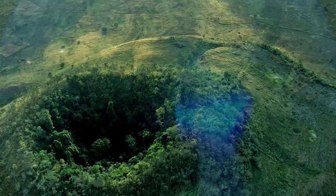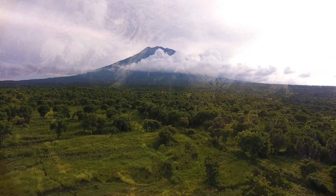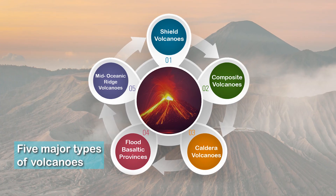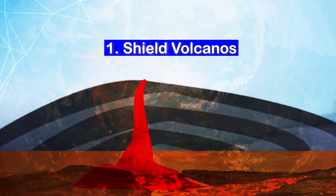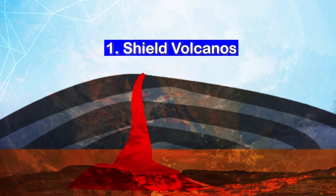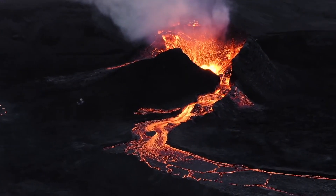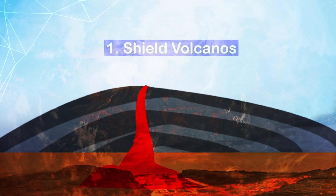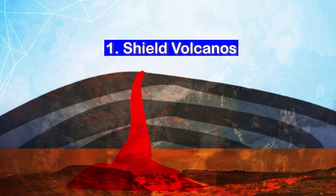These are the types of volcanoes on the basis of frequency of eruption. Volcanoes are also classified on the basis of nature of eruption and the form developed at the surface. Depending upon these two characteristics, there are five major types of volcanoes. The first is shield volcanoes. The shield volcanoes are one of the largest of all the volcanoes on the earth. The Hawaiian volcanoes are the most famous examples.